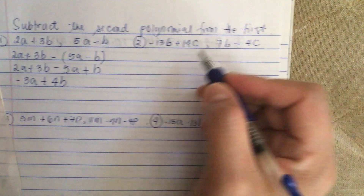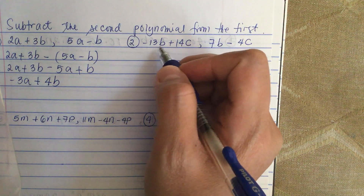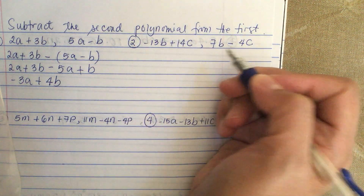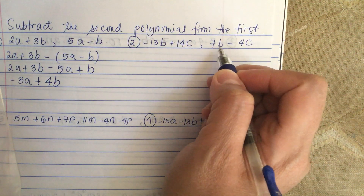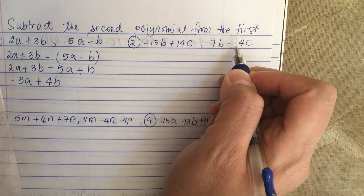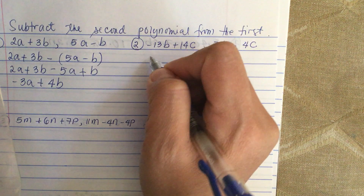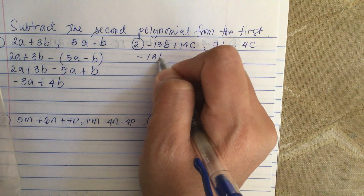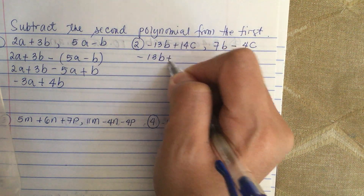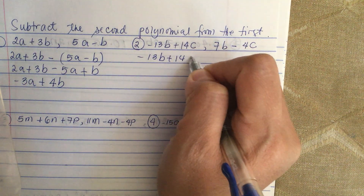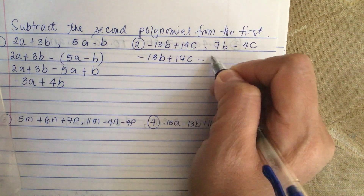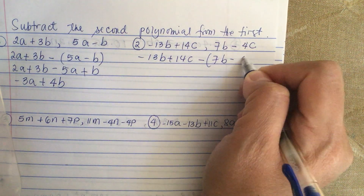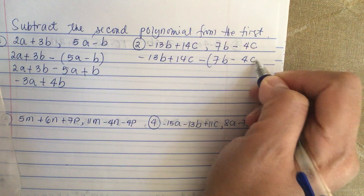Next problem: minus 13b plus 14c and then 7b minus 4c. So we set up: minus 13b plus 14c minus (7b minus 4c).